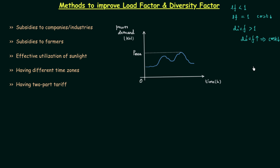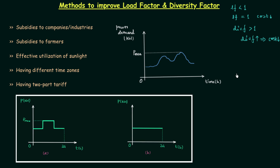Now we will talk about why the cost of electrical energy reduces by increasing the load factor and diversity factor. If you remember the last lecture, we had two different types of load curves. In load curve A we had two different types of load demands: the first is the base load and the second is the peak load. The base load is always there for 24 hours and we have to satisfy it. To satisfy the base load we use base load power plants — examples are thermal power plant, nuclear power plant, etc. These power plants run for 24 hours.